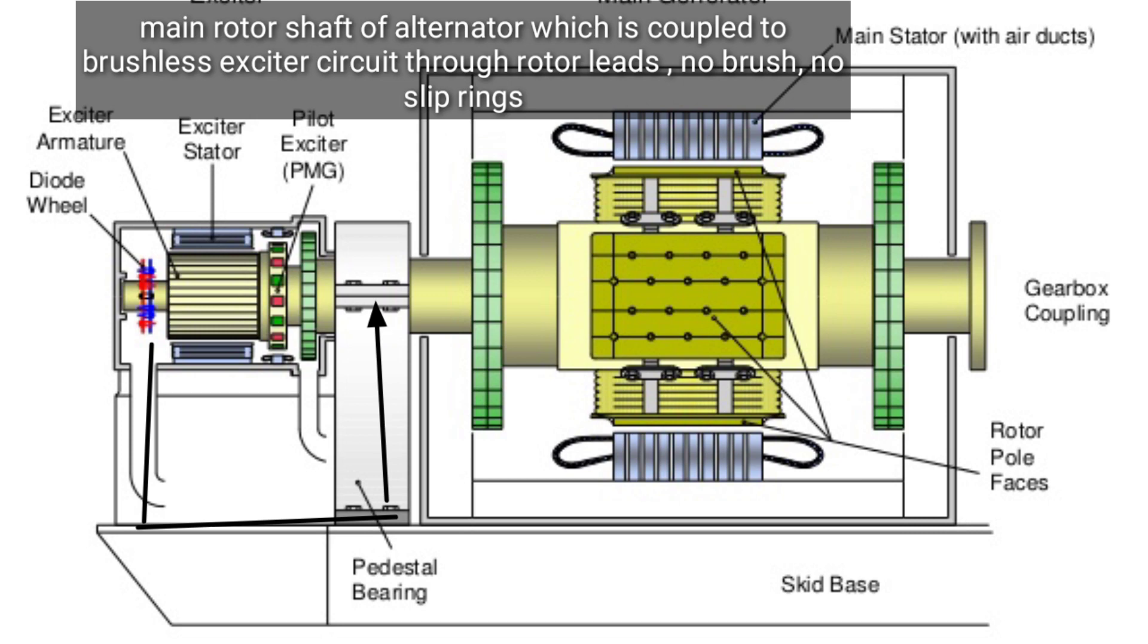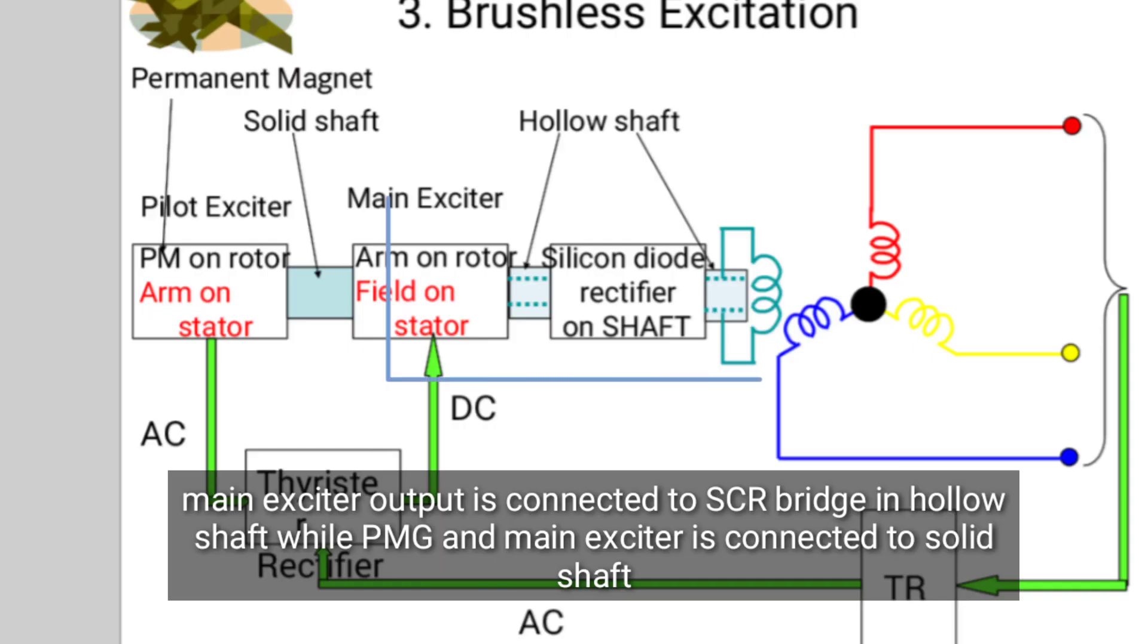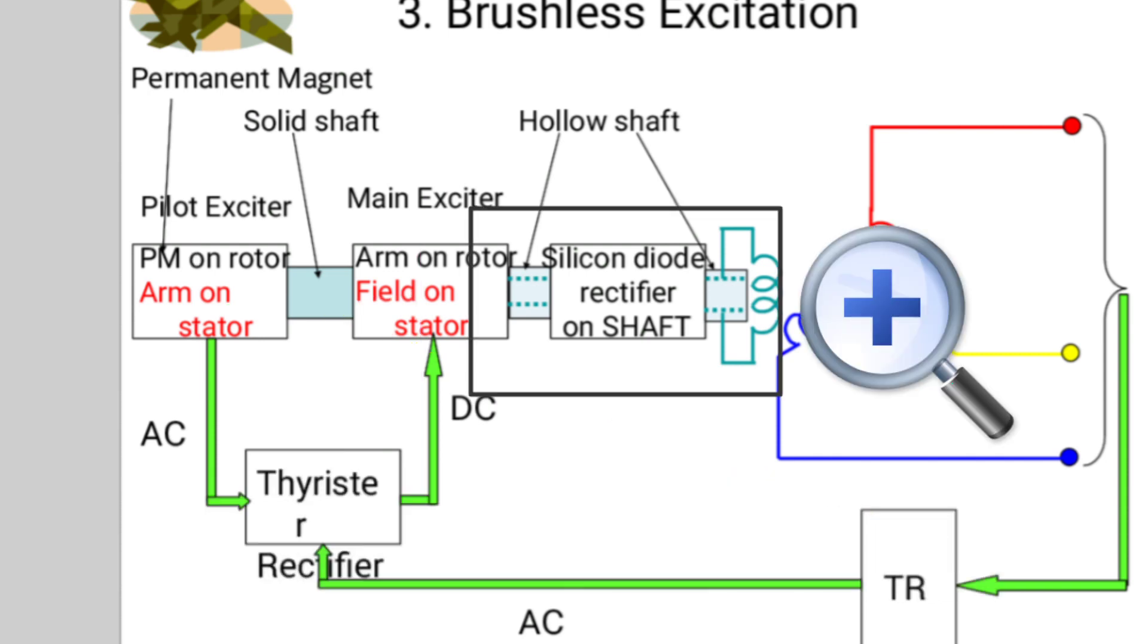Now zoom this part. The main exciter output is connected to a rotating rectifier bridge and hollow shaft, while the PMG main exciter is connected to a solid shaft. Now we zoom on the hollow shaft. This is the rotating rectifier.